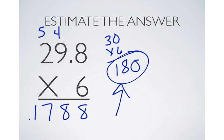I could put it here. I could put it between the 1 and 7. I could put it between the 7 and the 8. I could put it between the 8 and the 8. Or I could put it at the very end. Only one of those answers is going to get me close to 180. And that's right here. 178.8. And that's how you do the estimation method.